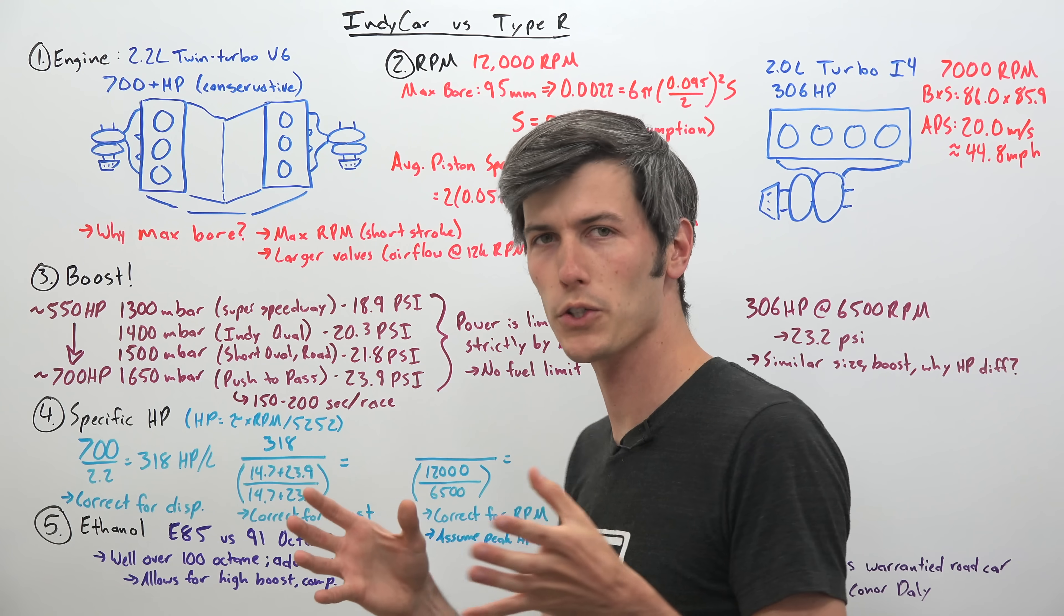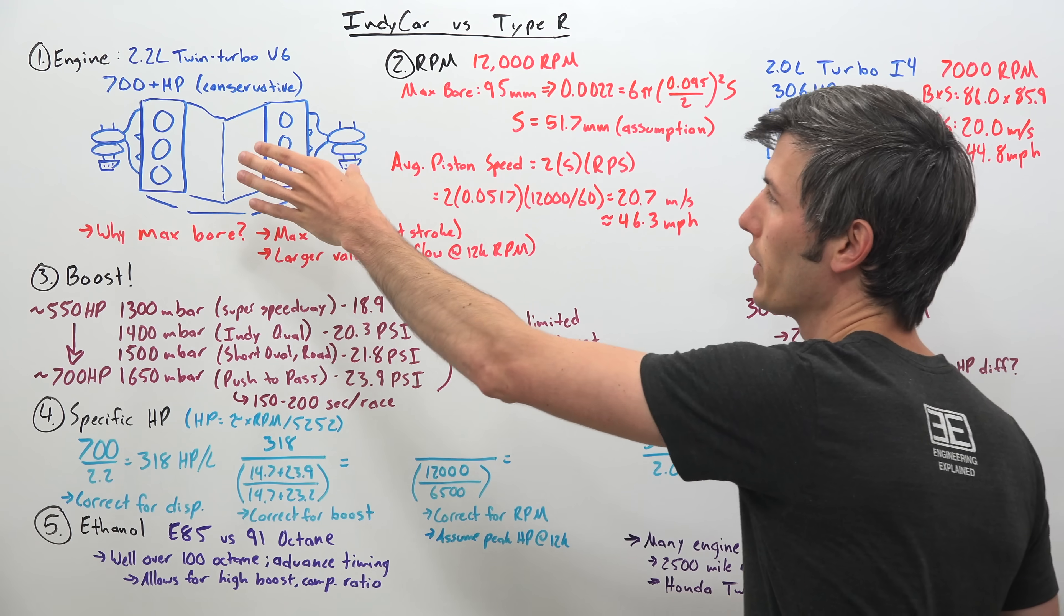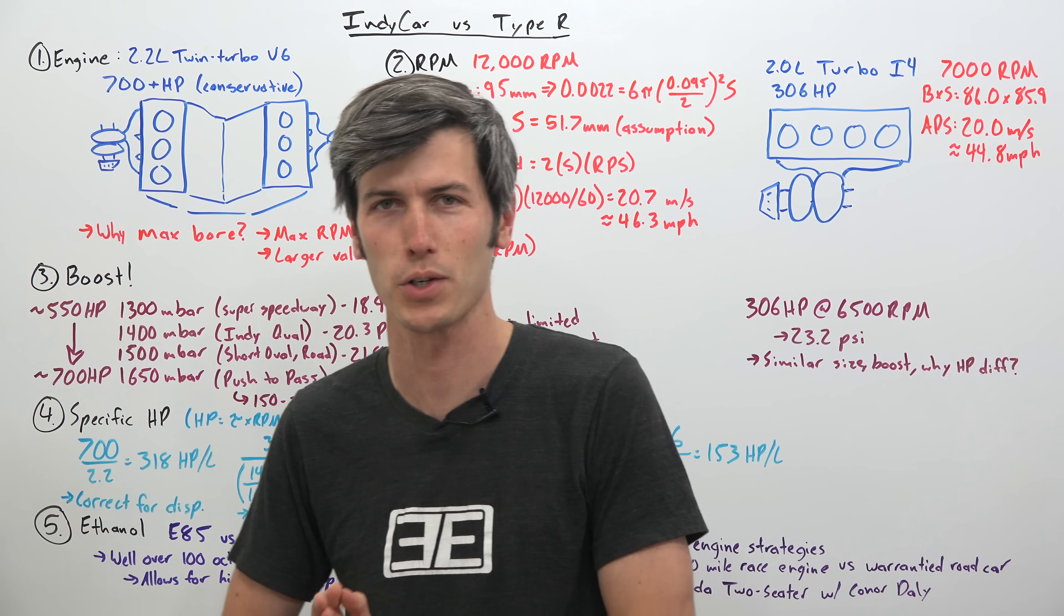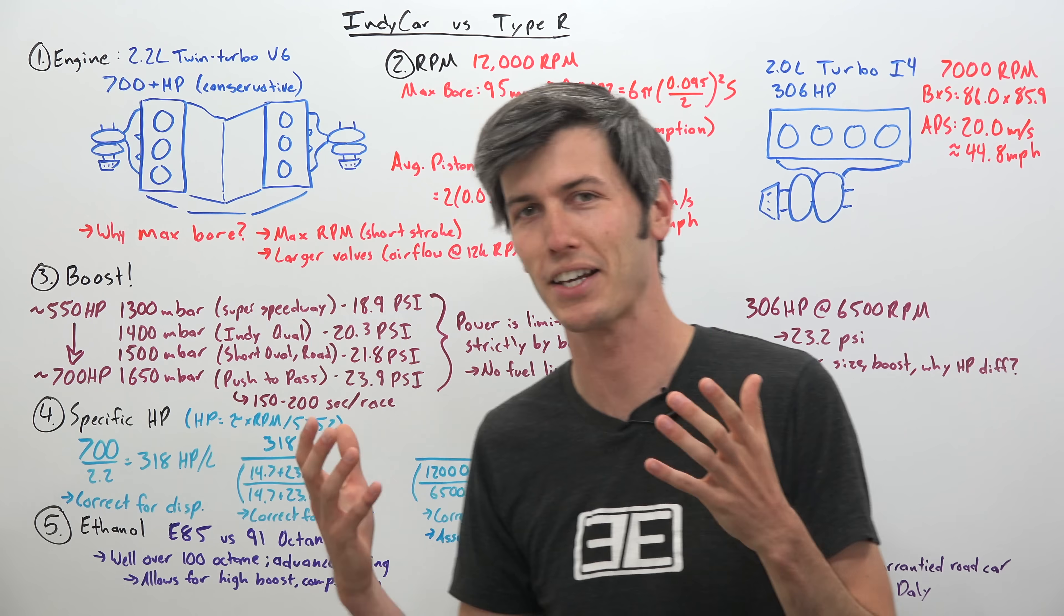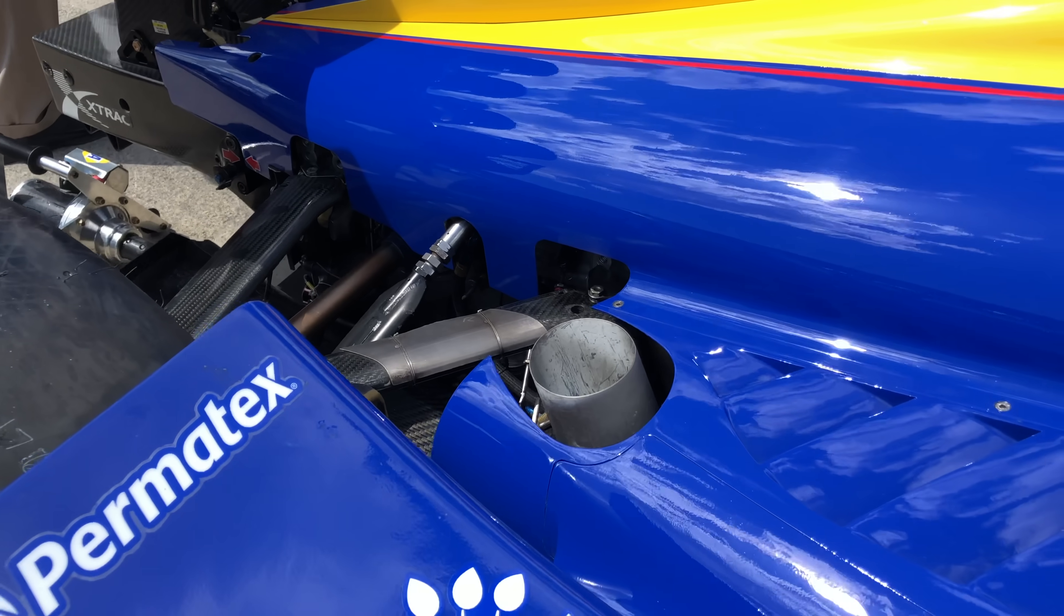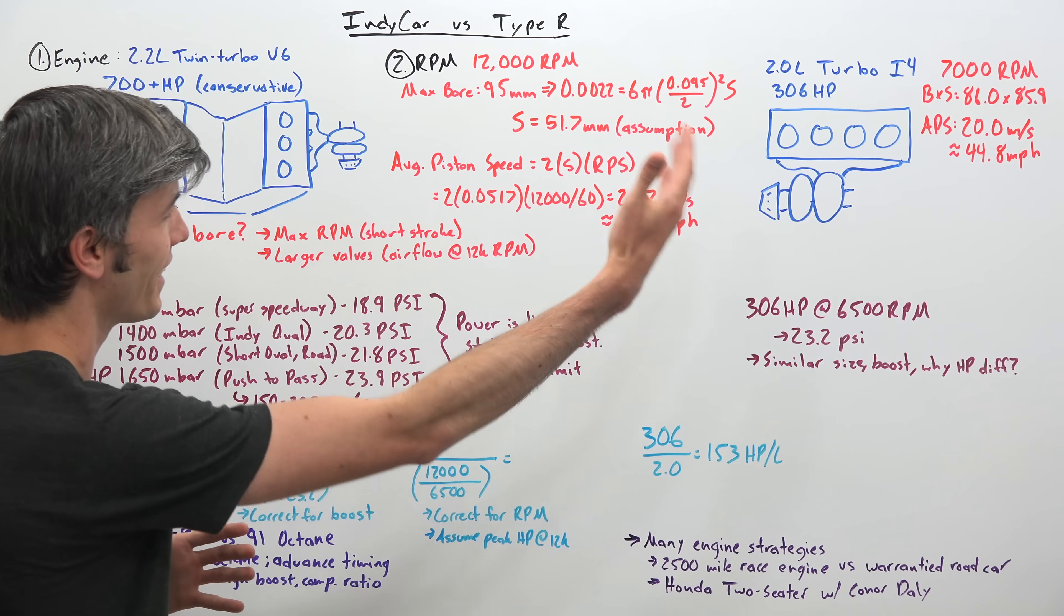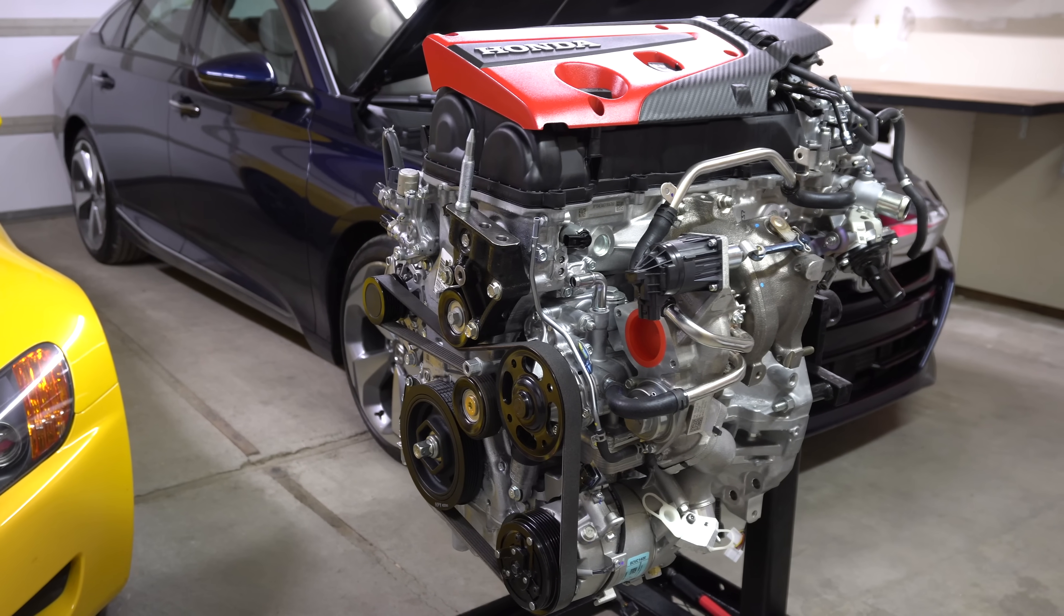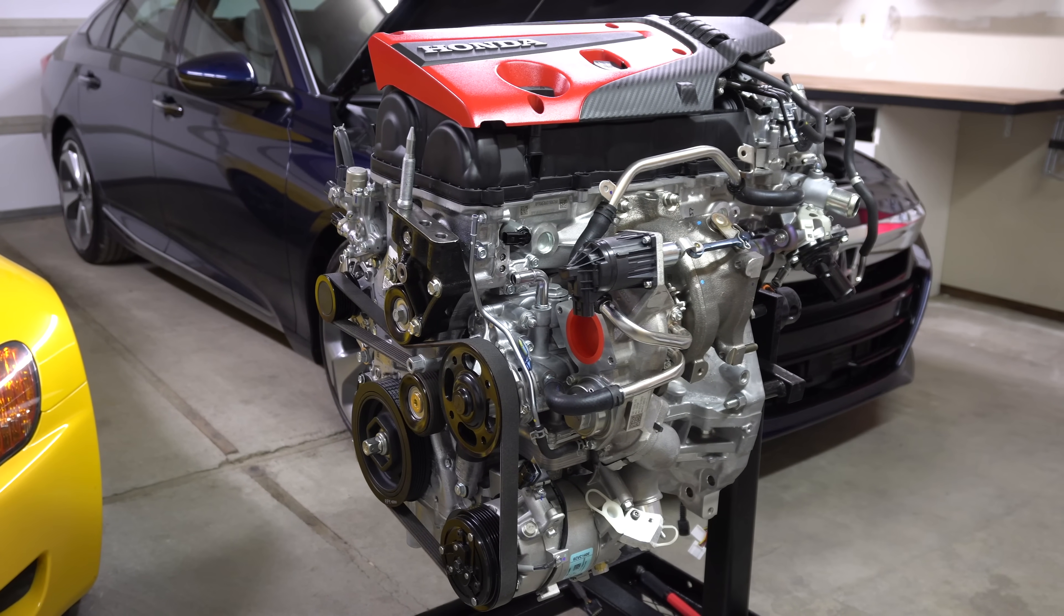So first off, the IndyCar engine is a 2.2 liter twin turbocharged V6 engine and it is producing over 700 horsepower. So 700 horsepower being a conservative estimate, Honda does not actually release the exact horsepower number for competitive reasons. And then in the Type R is a 2 liter inline four-cylinder which is also turbocharged and creating 306 horsepower.